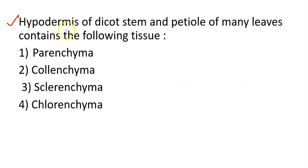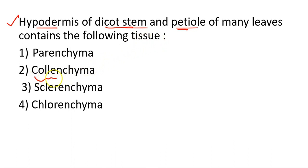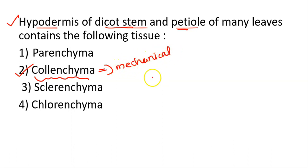Next question: the hypodermis of a dicot stem and petiole of many leaves contains which tissue? Four options: parenchyma, collenchyma, sclerenchyma, chlorenchyma. The answer is collenchyma — option 2. Collenchyma is a living mechanical tissue, and it provides mechanical support to the dicot stem and petiole.